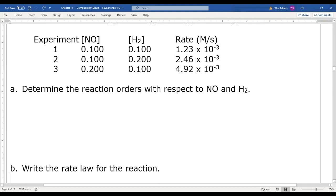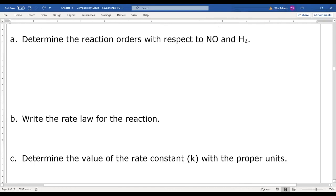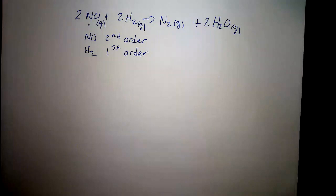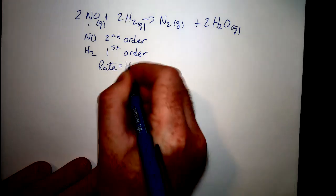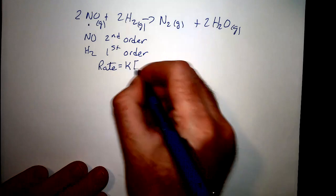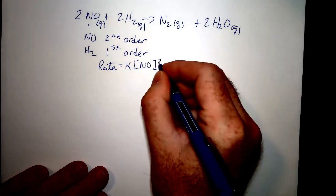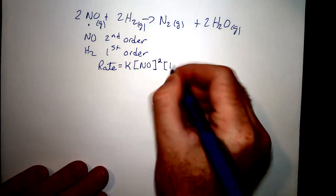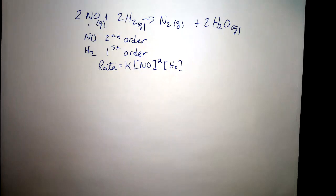So the rate law for the reaction is: rate = k[NO]²[H₂]. NO is second order, H₂ is first order, and the exponent of one for H₂ is left implied.